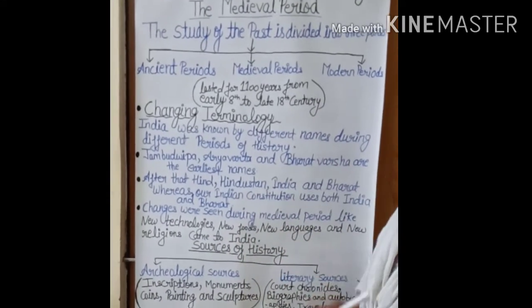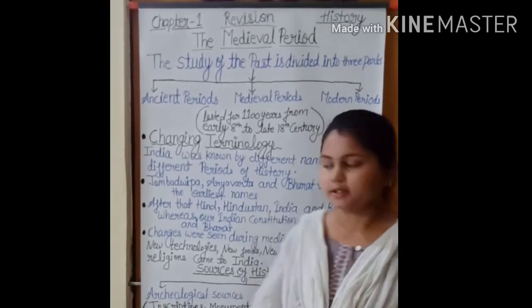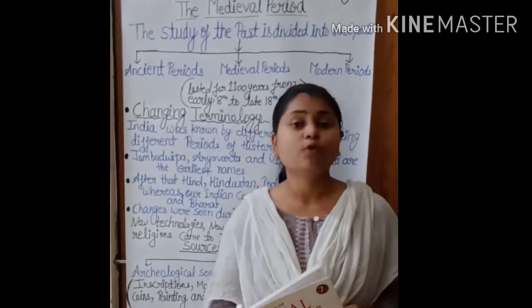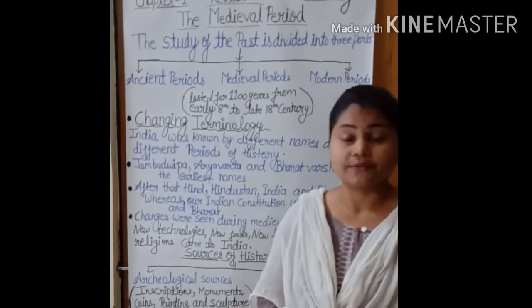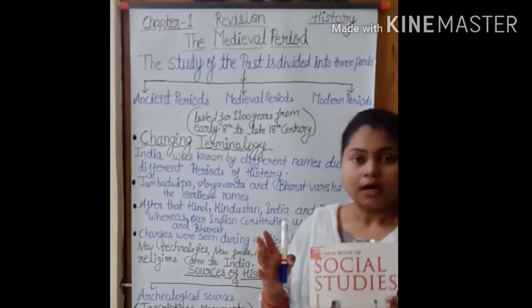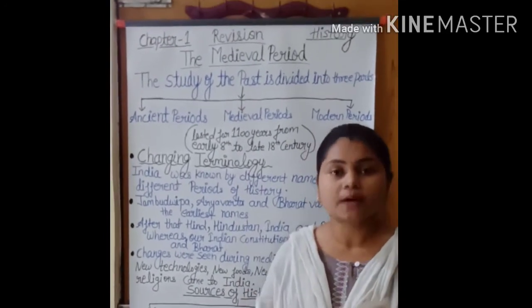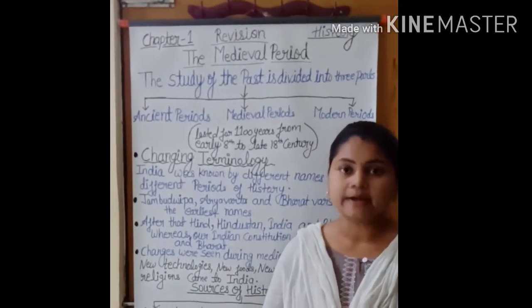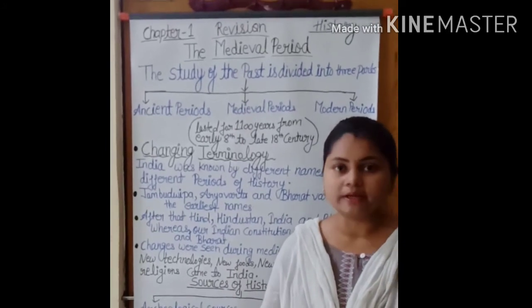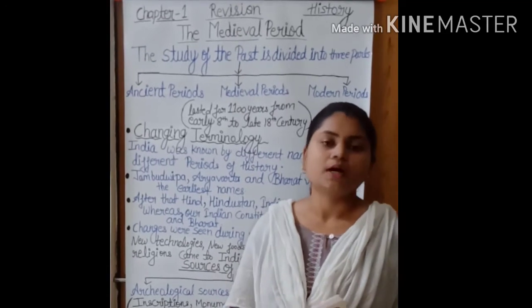New religions also came with people from different continents — Islam and Christianity came to India during the medieval period. The caste system was also very rigid in our country at that time. People were divided into castes and sub-castes and were very rigidly following this system.